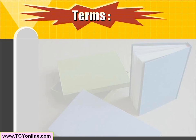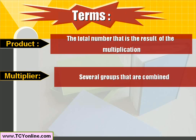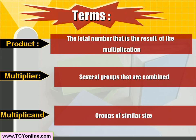Before learning about multiplication, let's see the definition of each term. First is product — it is the total number, basically the result of multiplication. Next is multiplier — these are the several groups which are combined. And finally we have multiplicand — these are the groups of similar size.